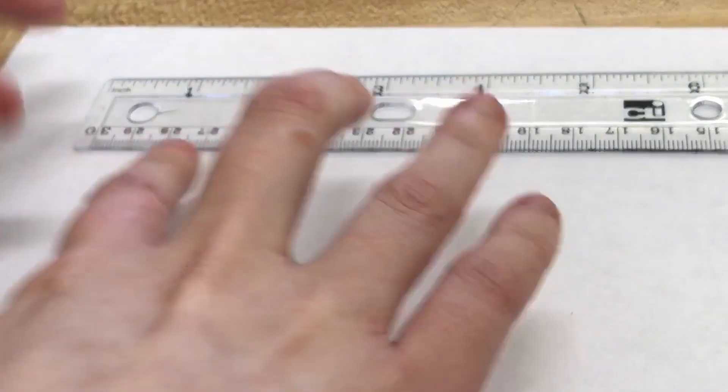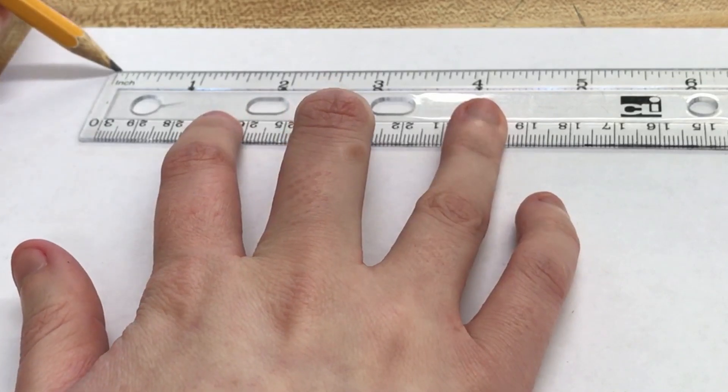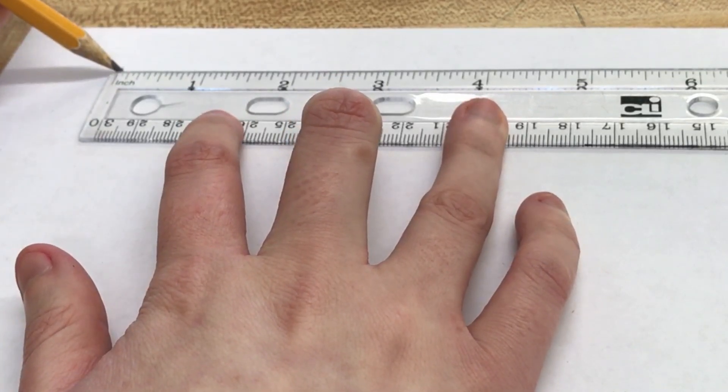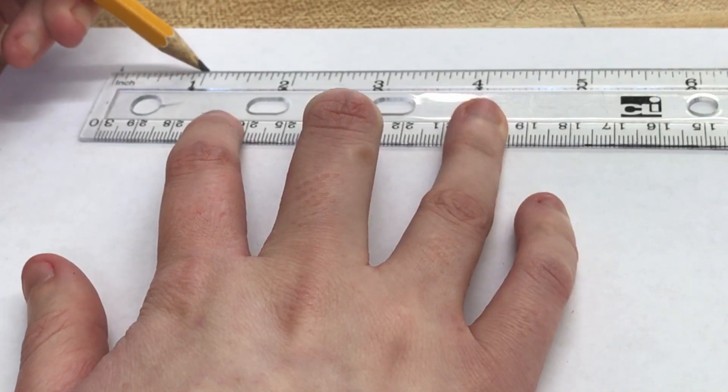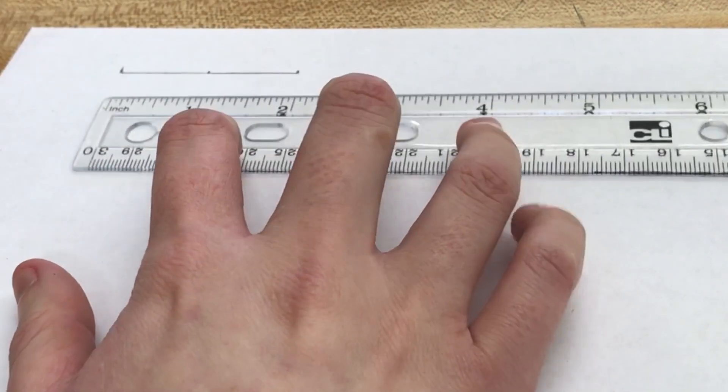Let's start at the top of our paper, putting our ruler close to the top, starting at the zero over here. Drawing a line to the one and putting a little dot. Drawing a line to the two, putting a little dot.